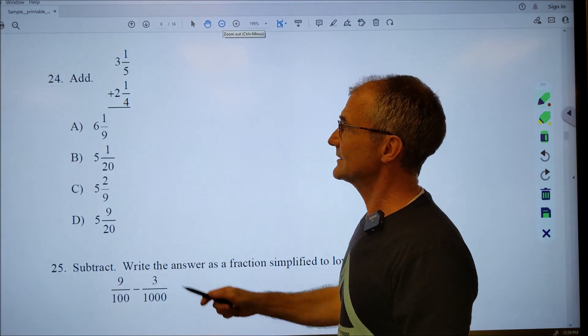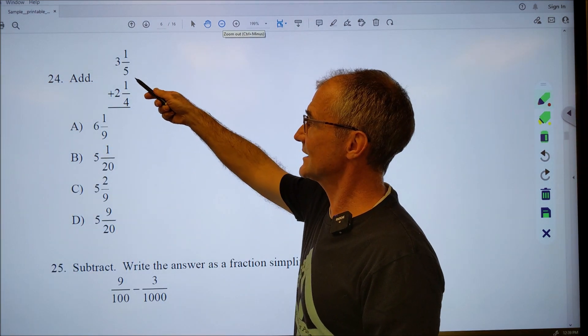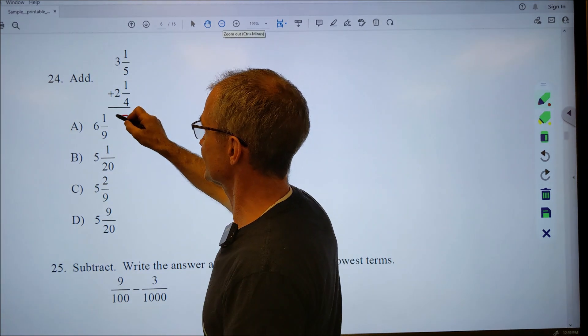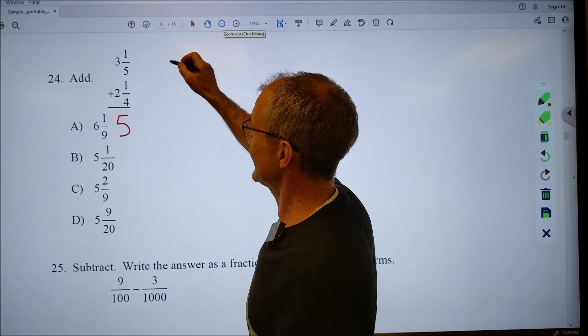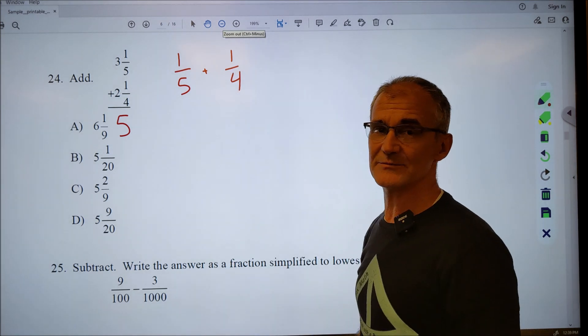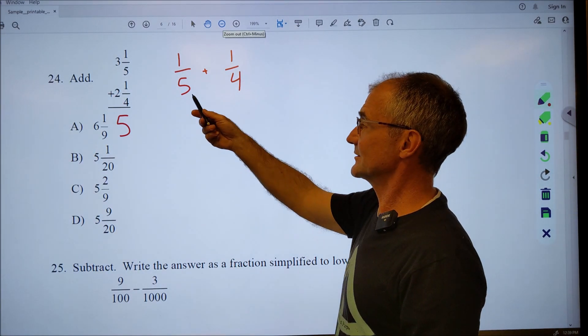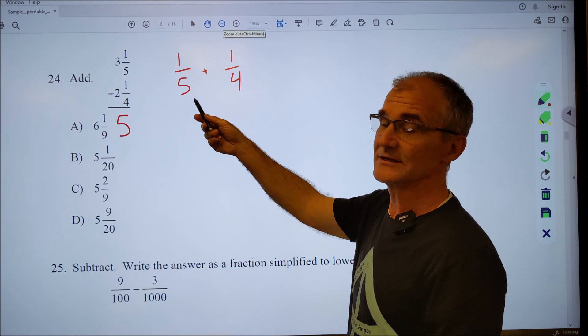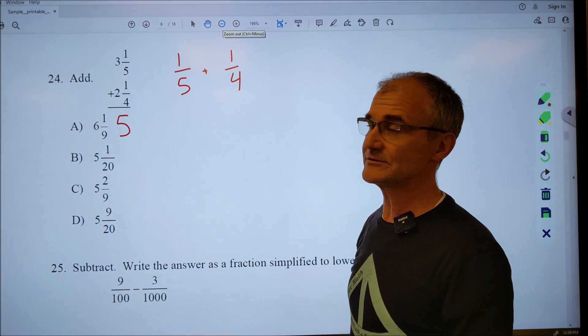Number 24. I have mixed numbers here. So I have a three and a two. I'm going to add those together to get five. And then I have the one fifth plus the one quarter. Again, I need a common denominator. It could be five, ten, fifteen, twenty. The only number both of these will go in is twenty.